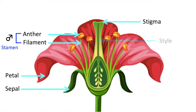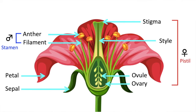The stigma, style, ovary and ovule are the female parts of a plant, and we call this the pistil. The stigma is the top of the female part of a flower and is involved in collecting the pollen grains. A pollen tube grows through the style until it reaches the ovary. The pollen tube then fuses with the nucleus of the ovule to complete the process of fertilisation.